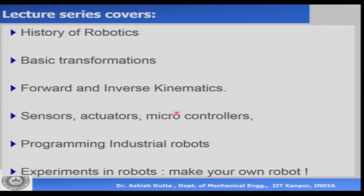These microcontrollers are programmed using language, sometimes C-sharp or some other kind of programming language. Finally, we will also have to look at robot programming languages. There are some languages, like Victor's assembly language, which is very specific for robot programming only and these are used in the industry. Here, we will be looking at the structure of this language and how to use it to program a robot for industrial applications.